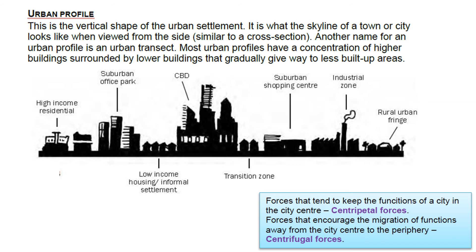The urban profile is another item we look at. It's the vertical shape of the settlement — as if you took a cross-section right through the middle of town. In the center, in the CBD region, you have the highest, tallest buildings. Around the CBD you have low-income housing and informal settlements. There's also a transition zone, which we'll look at in the next lesson. Further out you have suburban shopping centers and office parks, then industrial regions, and on the outskirts you would have high-income residential. Even further out would be the rural-urban fringe.